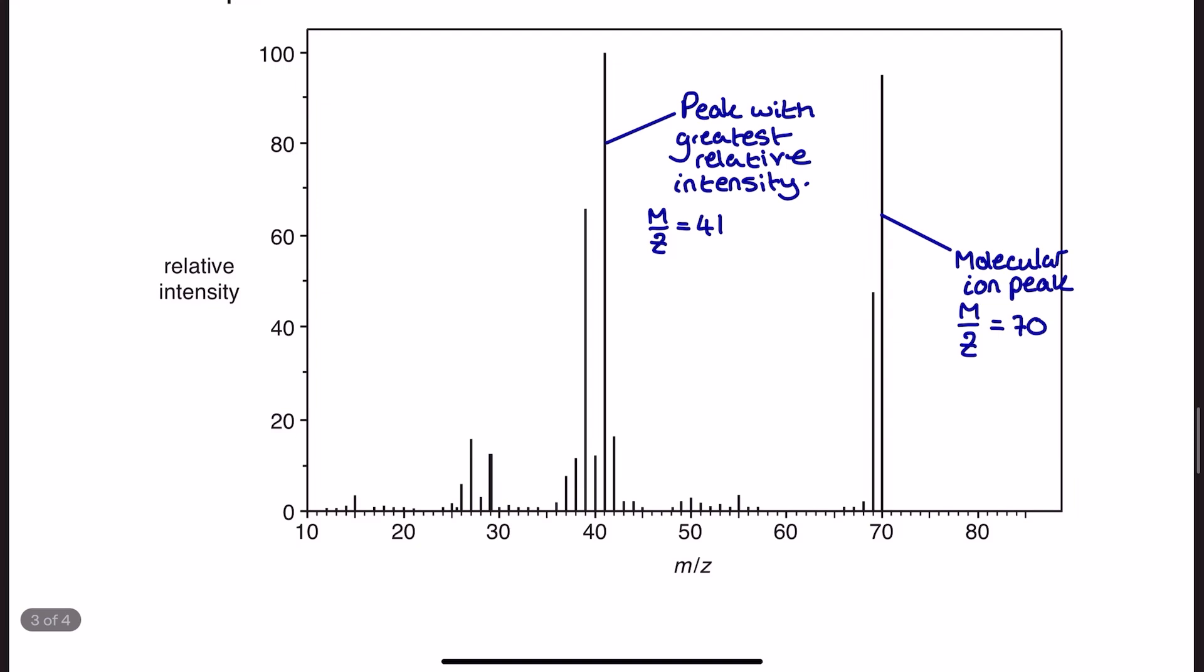Moving down here to the mass spectrum, I've got two very obvious peaks that I need to talk about. The first one is the molecular ion peak, which is going to be at 70. And that tells me that the molar mass of my substance is 70 grams per mole. And then I've got the peak with the greatest relative intensity, also known as the tallest peak on the mass spectrum, which is at 41. And that's been formed when a functional group is removed from the structure. And so I'm going to come back to that after I've got a suggestion of what my molecule might look like to back up my answer.